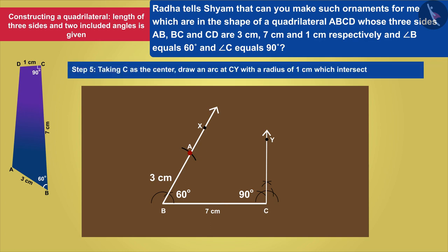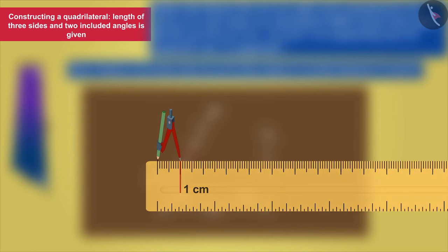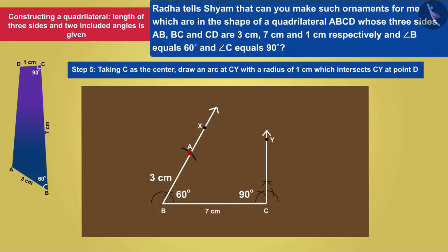Similarly, taking C as the center, he draws an arc on CY with a radius of 1 cm, which intersects CY at point D.